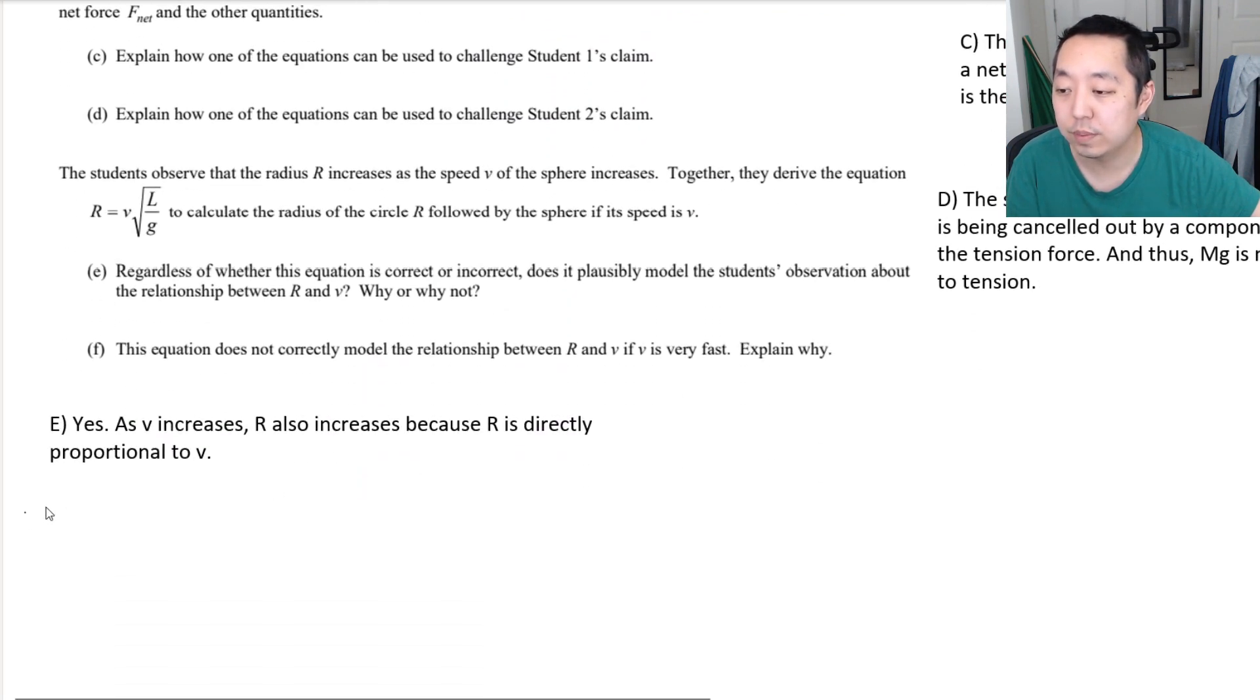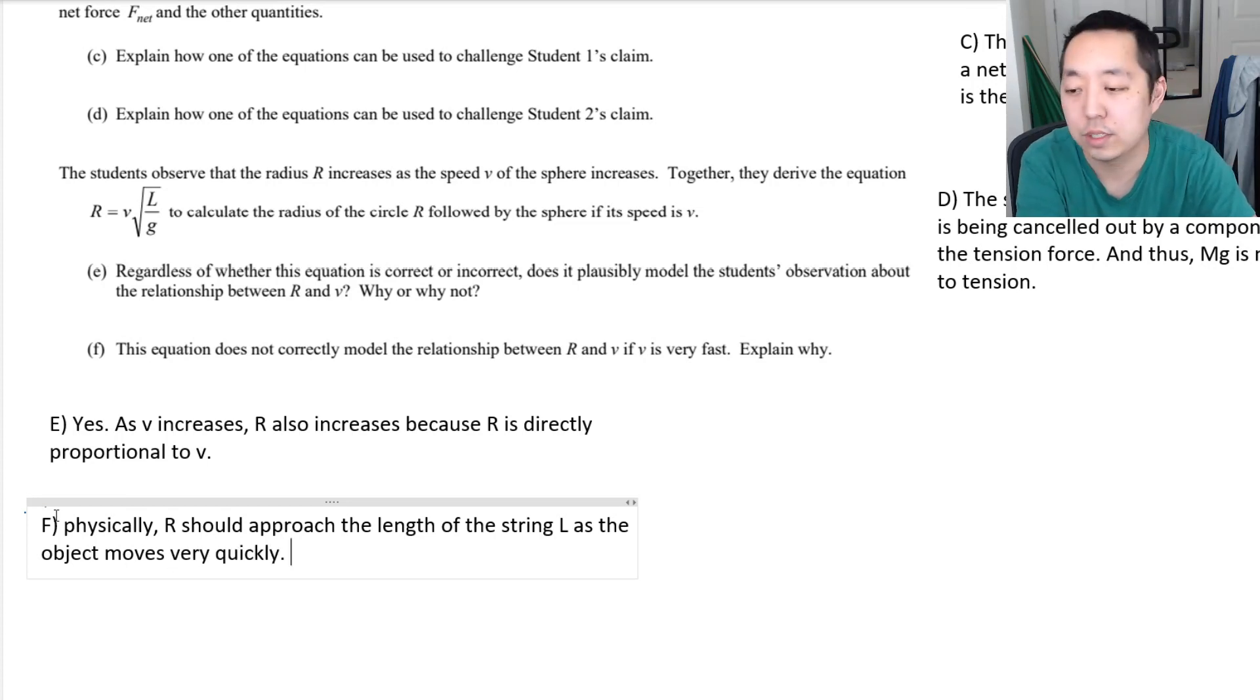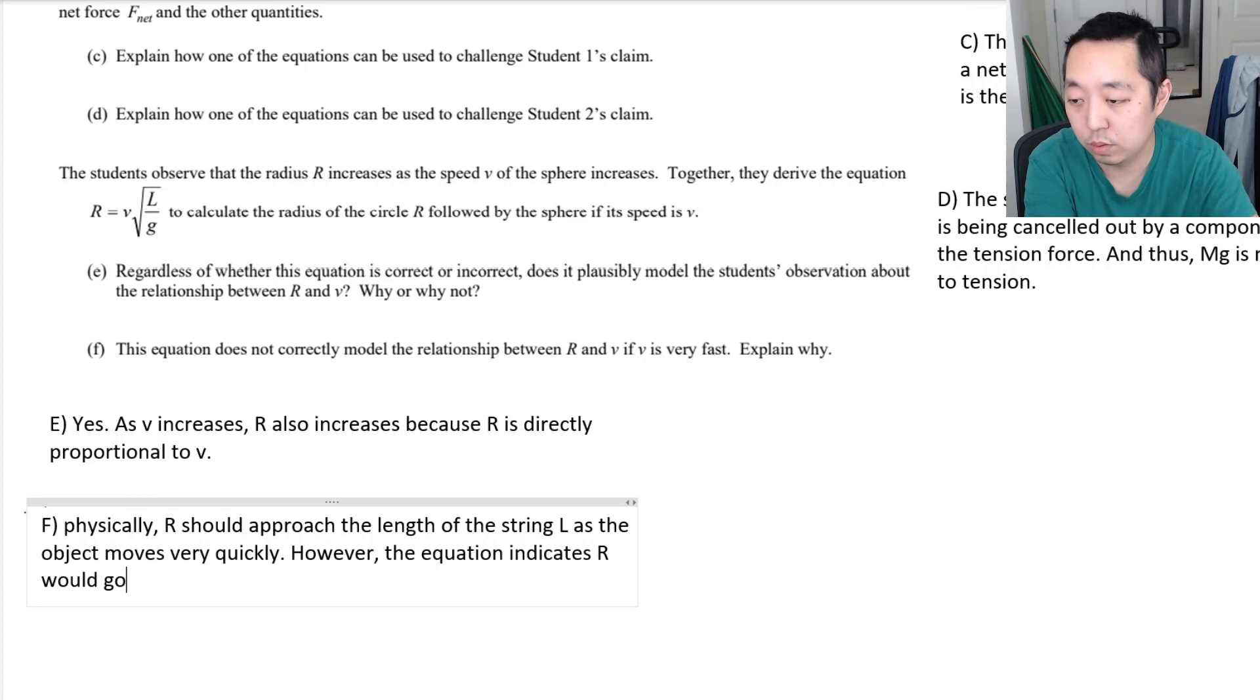So, assuming the string doesn't break, the R should max out at L. So we would say, physically, R should approach the length of the string as the object moves very quickly. So physically, R should approach the length of the string. However, the equation indicates R would increase indefinitely. That means if V was the speed of light, and I had a super strong string that could hold it in place, that R should be a giant number. Which is not what should happen. Which is inaccurate. So, that is how I would say F.